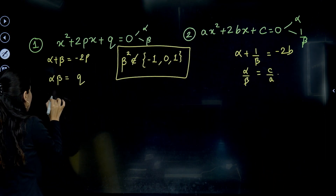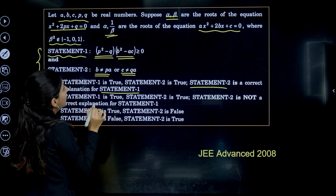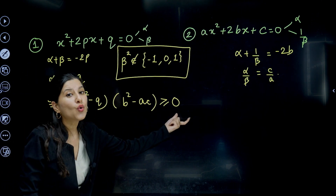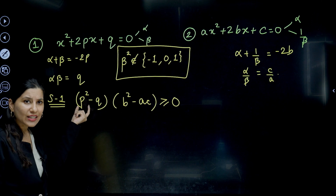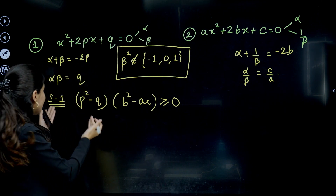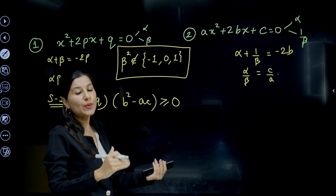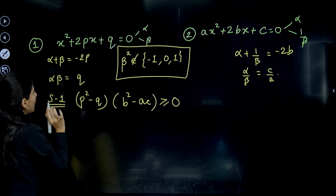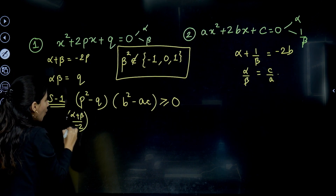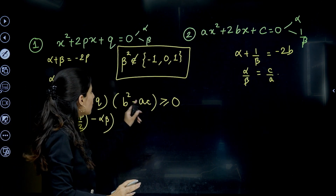Now let us check the validity of Statement 1: (P² − Q)(B² − AC) ≥ 0. To do this, I'll convert the entire expression in terms of alpha and beta. P equals (alpha + beta)/(-2), so P² = (alpha + beta)²/4. Q = alpha·beta. For the second bracket, B² − AC, I'll take A² common to work with B/A and C/A directly.